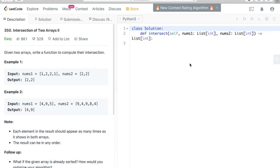Hello and welcome to another Python tutorial of Likot. Today let's do 350 intersection of two arrays. It's an easy question. Given two arrays write a function to compute their intersections.